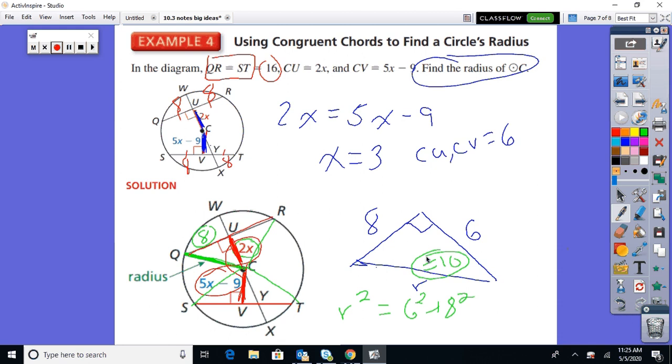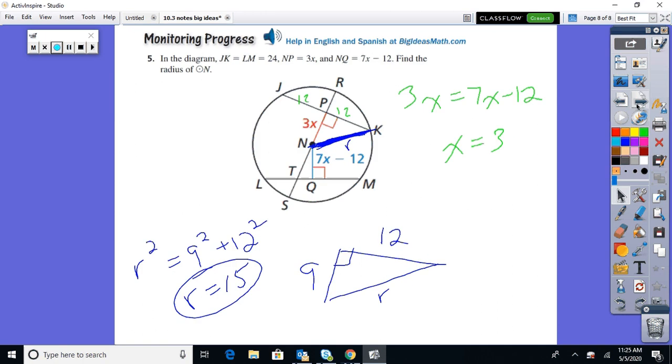Monitor progress. Pause it and try it so you can get the same type of concept. And we'll pick it back up. So here we are with our last question today. Monitor progress 5. So JK and LM were 24. So cut them in half, 12 and 12. Set NP equal to NQ. And you get X is 3. Plug it back in. And you get 9 and 9 for the distance away from the circle.